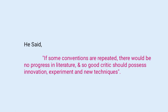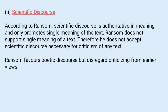At last, we can understand his ideas through a quote by John Crowe Ransom: 'If some conventions are repeated, there would be no progress in literature.' A good critic should possess innovation, experiment, and new techniques. We should not possess the conventions given by old critics or writers, because if we want progress in literature, we need to do innovation, experiment, and take up new techniques. That is what he tries to explain in his note, Poetry: A Note on Ontology.